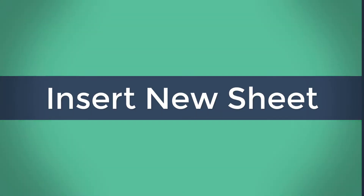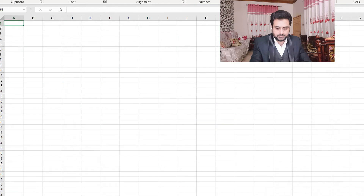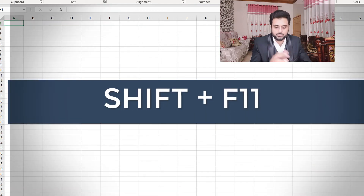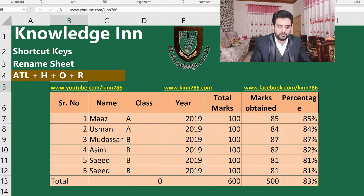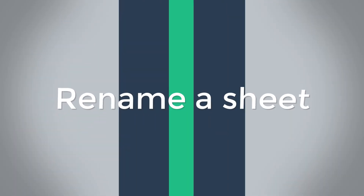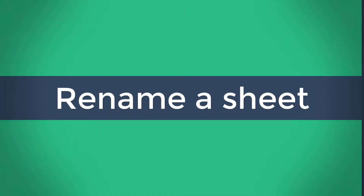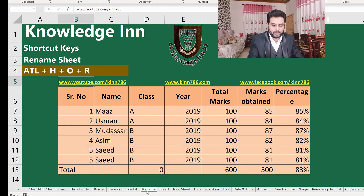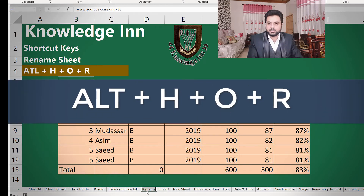Pressing Shift+F11 will open a new sheet. And if we want to rename a sheet, the shortcut key is Alt+H+O+R. Using Alt+H+O+R here we can rename the sheet.